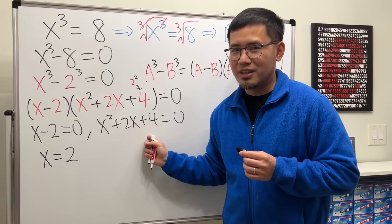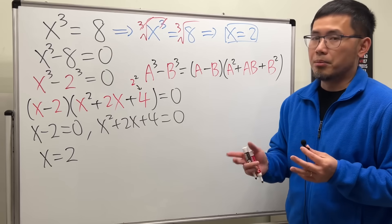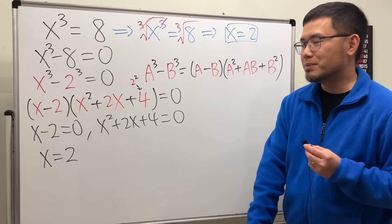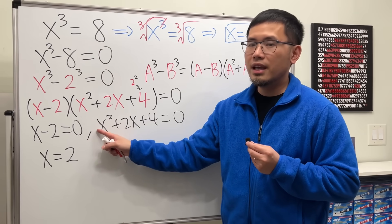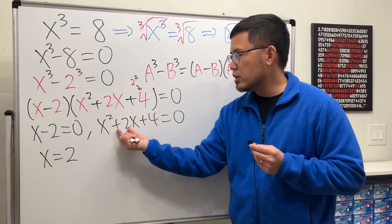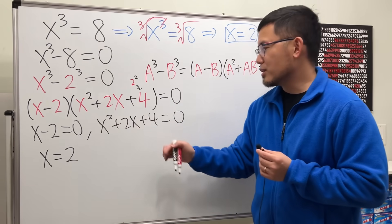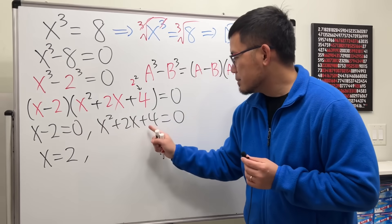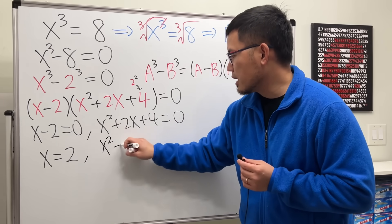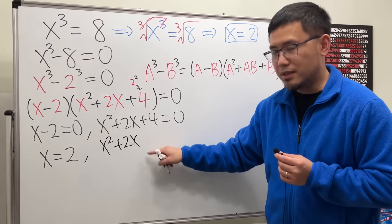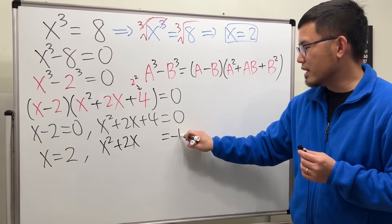The second factor gives us two more complex solutions. To solve x squared plus 2x plus 4 equals zero, let's complete the square. We already have a leading coefficient of 1, and the coefficient of x is even, so completing the square will be straightforward. Move the 4 to the other side to get x squared plus 2x equals negative 4.